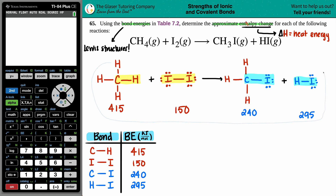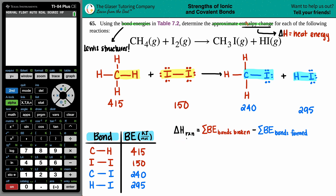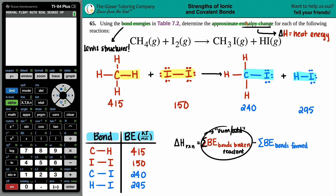The formula to find the approximate delta H for the reaction is: delta H_rxn equals the sum of all bond energies for bonds broken minus the sum of all bond energies for bonds formed. The reactant side is always the broken side — you have to break those bonds to form the products. The product side gives you the bonds formed.